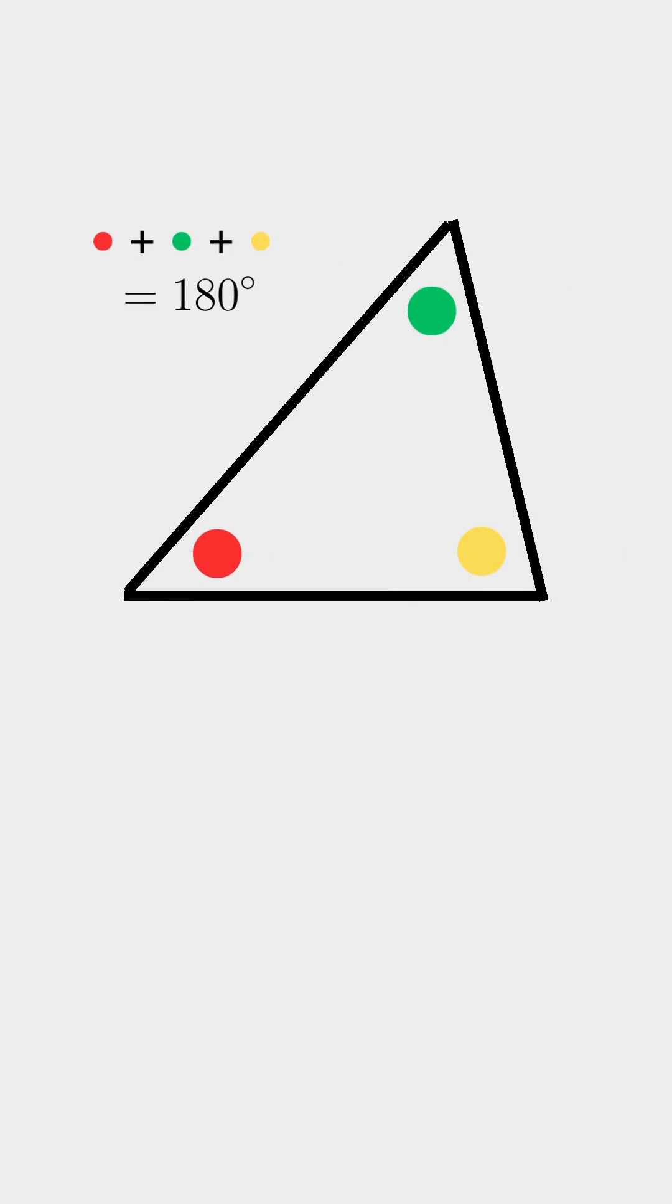Now when you take the two parallel lines away, you can see that you have a value for each angle in the triangle. As shown previously, angle red, green, and yellow add up to 180 degrees, and therefore you have shown that any triangle's interior angles add up to 180 degrees.